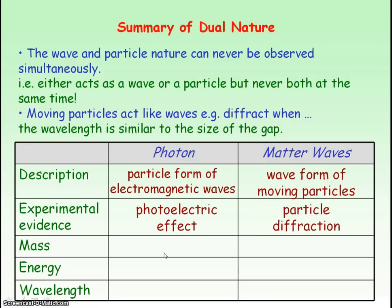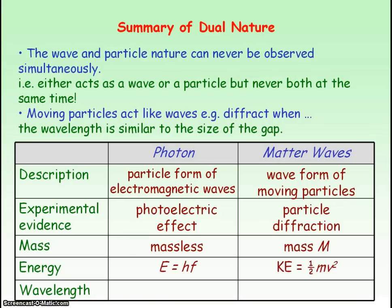Photons have no mass, but matter waves have the mass of the particle. Photons have energy given by hf, and matter waves have kinetic energy because they are moving particles. The wavelength of a photon is given by the wave speed divided by the frequency of the electromagnetic waves, whereas the wavelength of matter waves is equal to Planck's constant divided by the momentum of the moving particle.